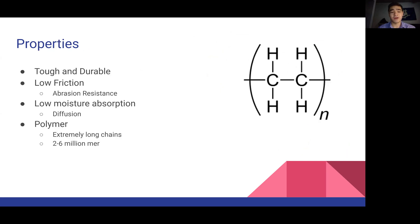Next, we have its properties. It is tough and durable, has low friction so it is abrasion resistant, and low moisture absorption. This is due to its diffusion properties and the structure of ultra-high molecular weight polyethylene preventing the diffusion of moisture, such as water or other substances, into the molecular structure.